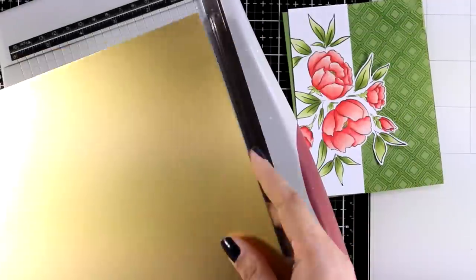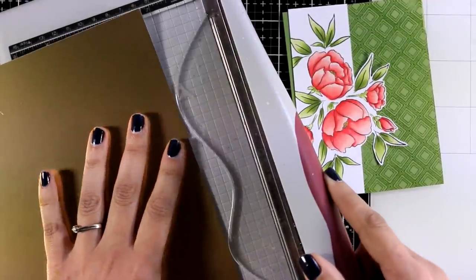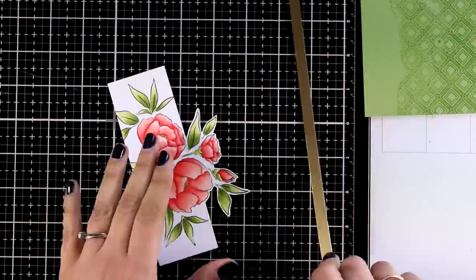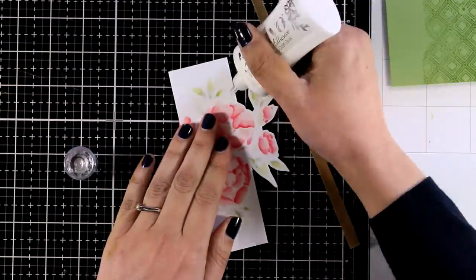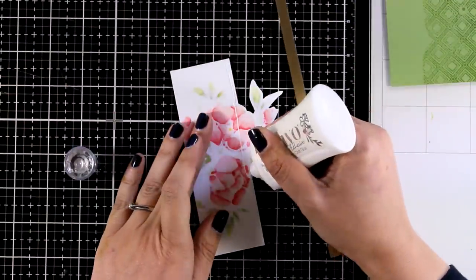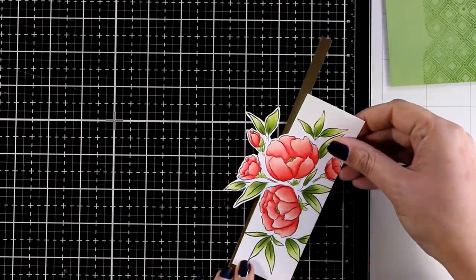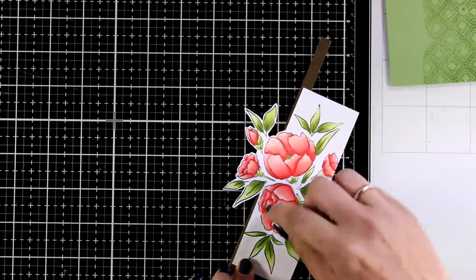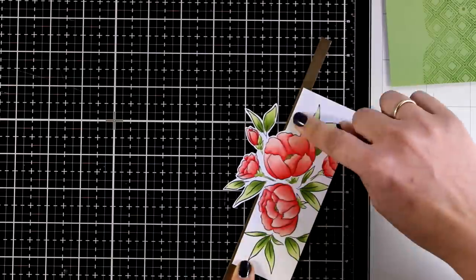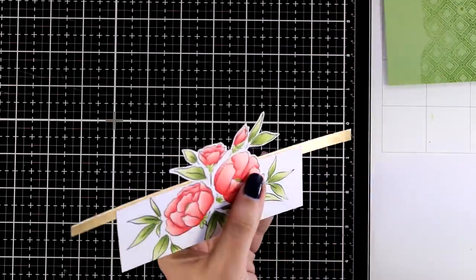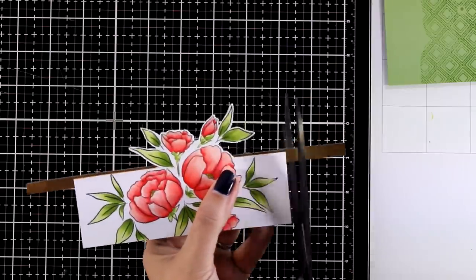Now I also grabbed my gold cardstock and I'm going to cut out a strip out of that. With my Nuvo Deluxe Glue I'm going to stick it at the back along the cut line, so this is going to give a nice pop of shine. Now my border looks more finished and it has that professional look to it. I'm going to use my scissors to cut out any excess paper.